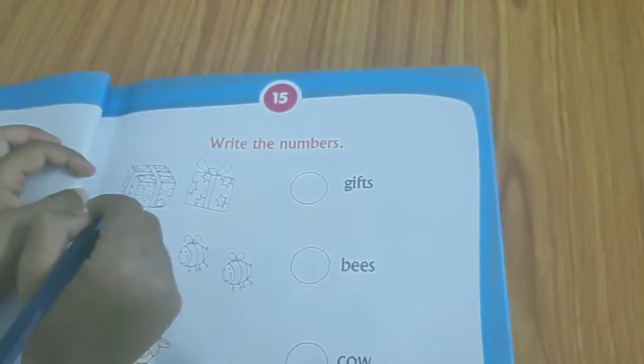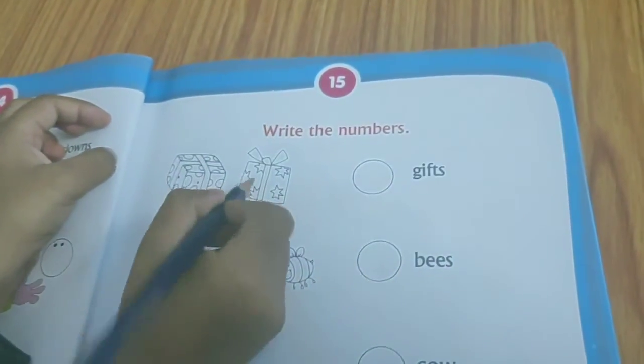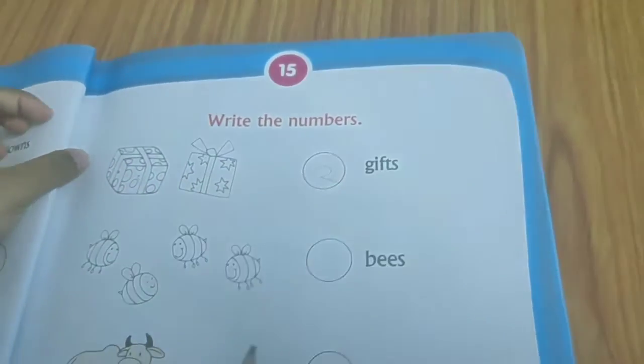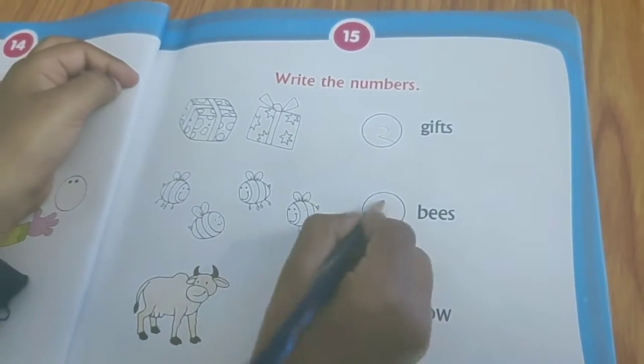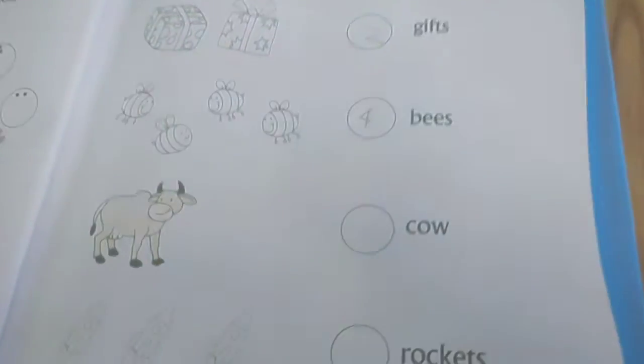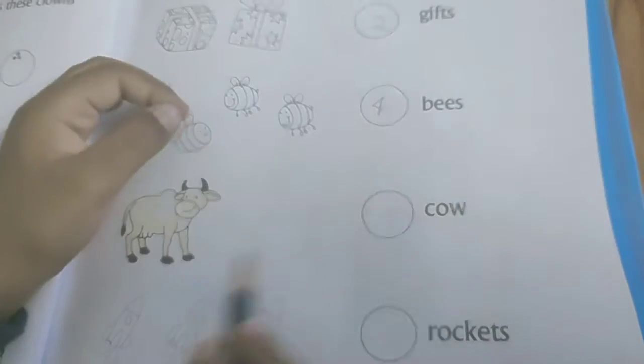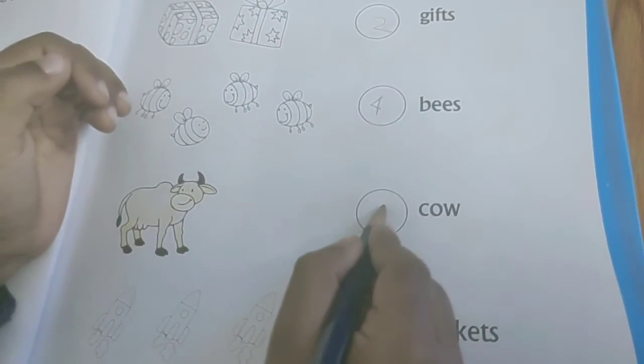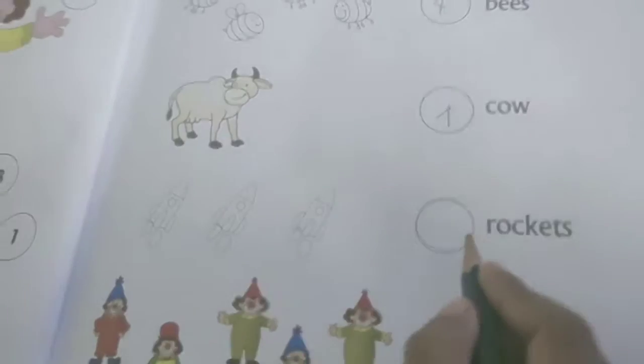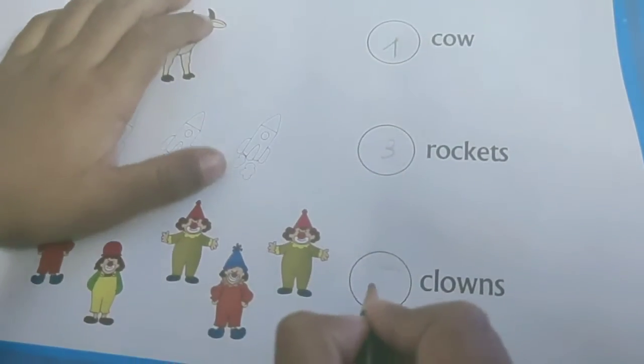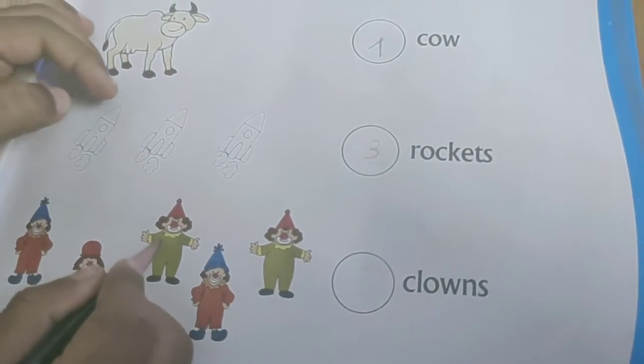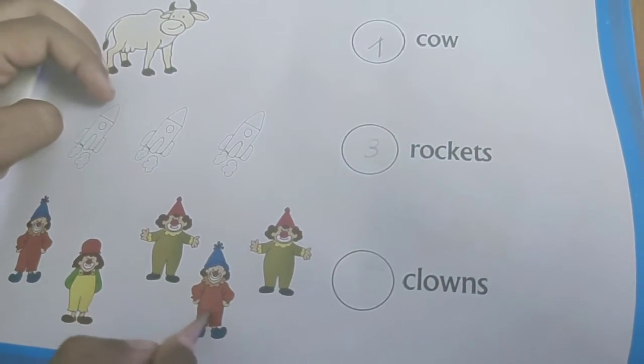Write the numbers. Okay, let's go. One, two, yes. One, two, three, four, yes. One, two, three, four, yes.